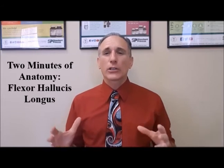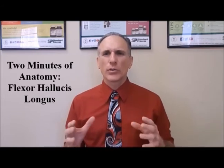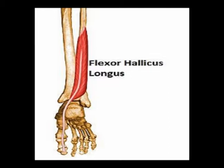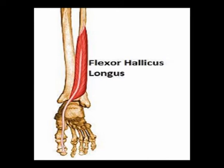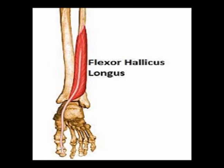The flexor hallucis longus muscle is classified as an extrinsic foot muscle because its origin is located outside of the foot. It's located in the lower leg, and the insertion is in the foot, so it makes foot bones move. But the origin of the muscle is located outside of the foot, so therefore it is classified as an extrinsic muscle.